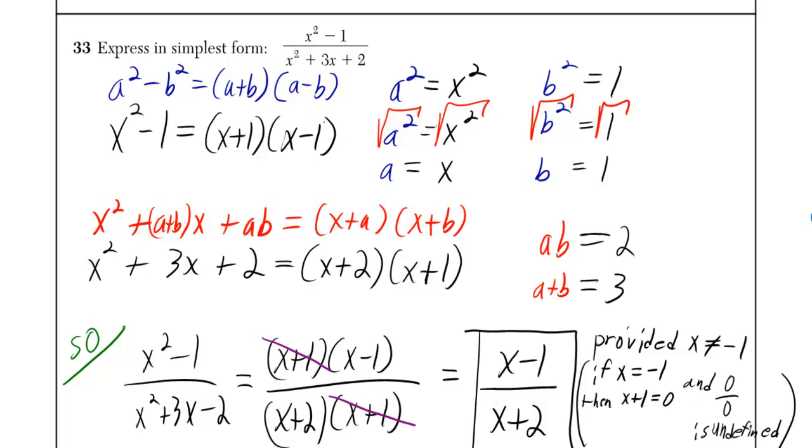So, x plus 1, x minus 1. Alright, that shit was pretty tight, right? Well, now we gotta factor the bottom. The bottom is in the form of x squared plus a plus bx plus ab, because you can find two numbers a and b that multiply together to give you 2 and add together to give you 3. Those numbers are 2 and 1.